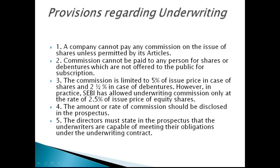Provisions regarding underwriting: A company cannot pay any commission on the issue of SAS unless permitted by its articles. Commission cannot be paid to any person for SAS or Depengers which are not offered to the public for subscription. The commission is limited to 5% of issue price in the case of SAS and 2.5% in the case of Depengers. However, in practice, SEBI has allowed underwriting commission only at the rate of 2.5% of the issue price of equity SAS. The amount or rate of commission should be disclosed in the prospectus. The directors must also state in the prospectus that the underwriters are capable of meeting their obligations under the underwriting contract.